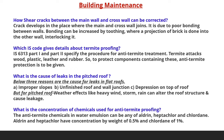The next question is: what is the concentration of chemicals used for anti-termite proofing? Anti-termite chemicals in water emulsion can be any of aldrin, heptachlor, and chlordane. Aldrin and heptachlor have a concentration by weight of 0.5%, and chlordane of 1%.